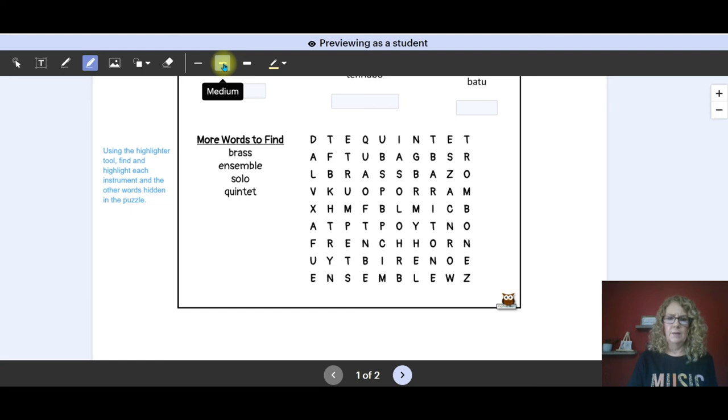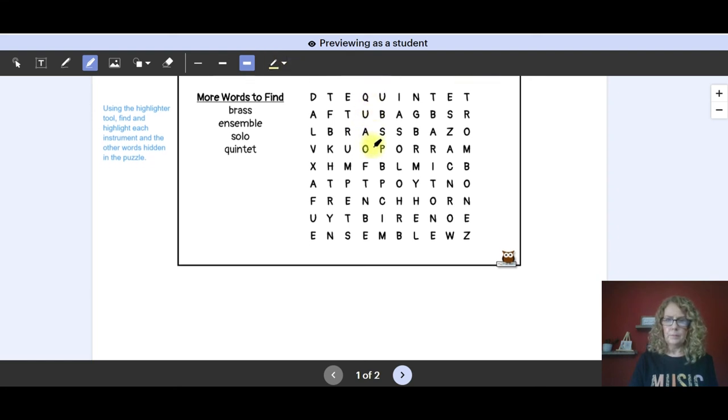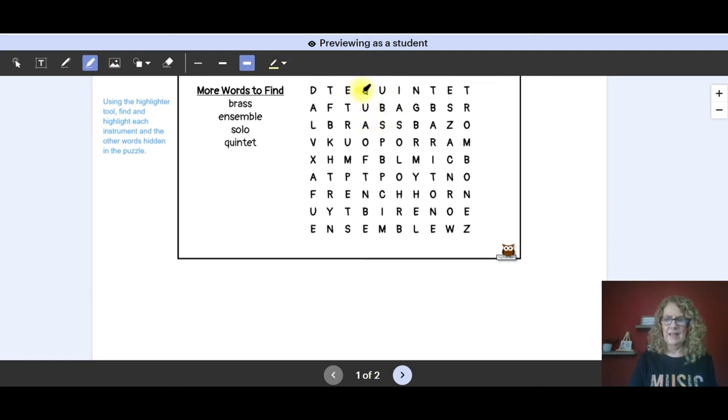You can use the thin, the medium, or the thick. I like to do the thick and just highlight it. You also have several color options and I like to allow the kids to change color. It makes it just a little more fun. So they're simply going to highlight the words that they find in the puzzle and changing colors makes it more fun when they can turn in an activity.